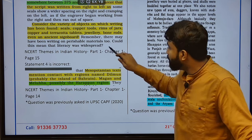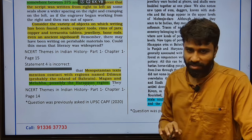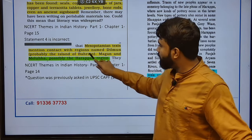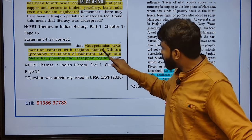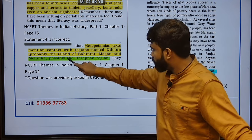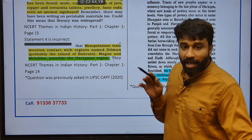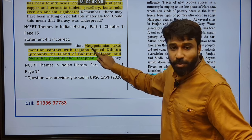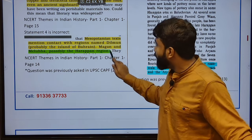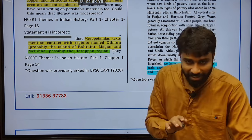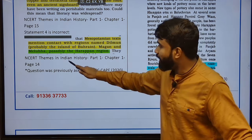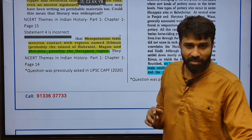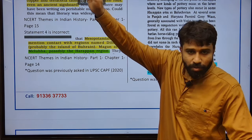Remember there may have been writing on perishable material too. The Mesopotamian text mentioned about this region — from Bahrain, it was named Dilmun, probably the island of Bahrain. The island of Bahrain was called Dilmun by Mesopotamian people. And Magan and Meluha — possibly the Harappan region. Magan and Meluha were the names used to refer to the Harappan region, which was actually iterated by those Mesopotamian people.